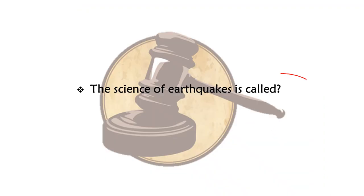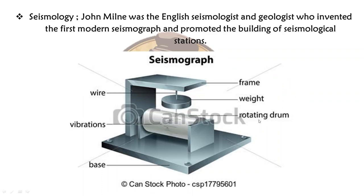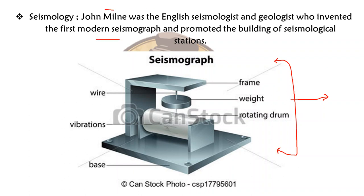The science of earthquakes is called seismology. A related fact: John Milne, M-I-L-N-E, was the English seismologist and geologist who invented the first modern seismograph and promoted the building of seismological stations. Through a seismograph you can monitor the vibrations of the earth to get the intensity of an earthquake by measuring the seismic waves.